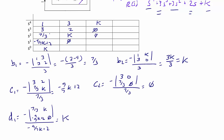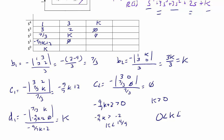Now that the first column is complete, we check for stability. There must be no sign changes. The values 1, 3, and 7/3 are positive. We need negative 9k/7 plus 2 to be greater than zero, which gives k less than 14/9. We also need k to be greater than zero. Therefore, the range of k for the system to be stable is 0 less than k less than 14/9.